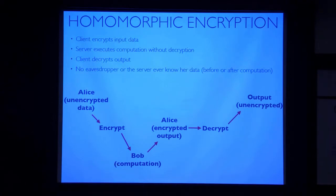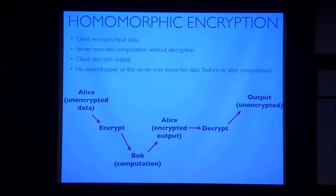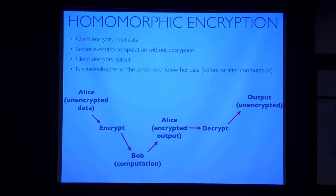What's the difference with blind quantum computing? With homomorphic encryption, Alice has just the data and Bob has the algorithm description and the computer. With blind quantum computing, Bob has a universal quantum computer and Alice is communicating a description of the algorithm and the data, wanting to keep both secret. So it's actually a harder thing to do — but conceptually it's basically achieving the same ends.